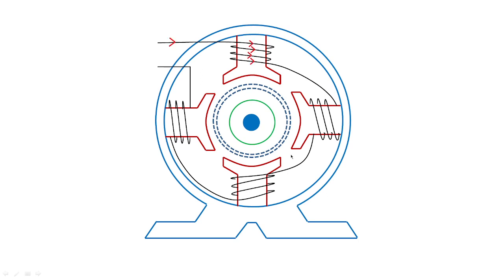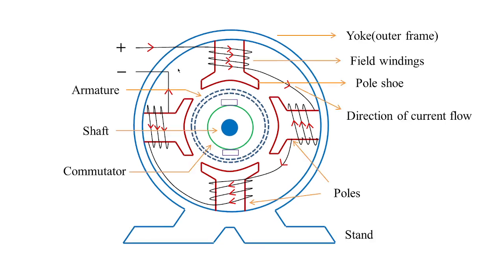Regarding the direction of currents: if you see the current flowing from the top, the same current comes out and goes to the bottom. The winding is taken at the bottom, so the current comes in from the bottom and out over the top. Similarly, the current coming out from that side goes like this, and that is how the output is obtained. The brush contacts placed on the commutator collect the current from the commutator. This is how the construction details of DC machines look.